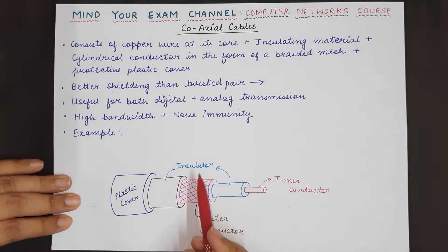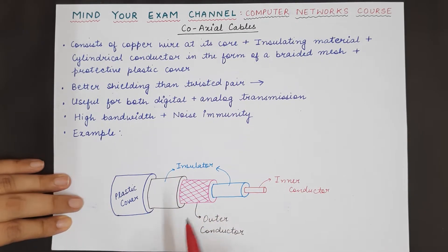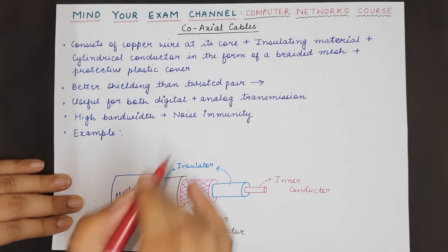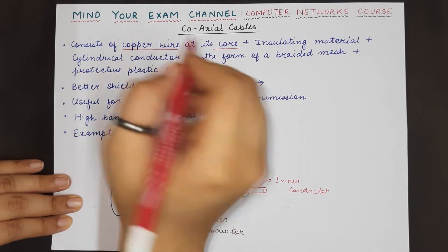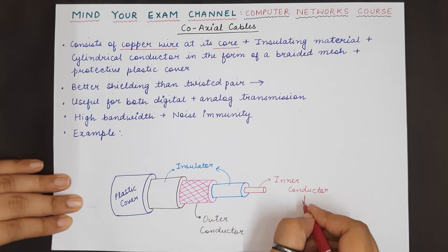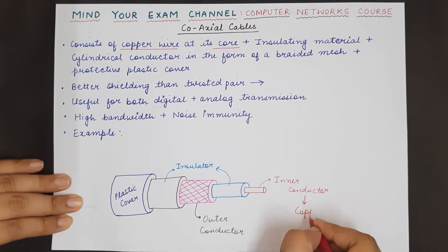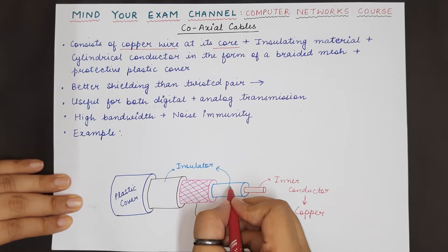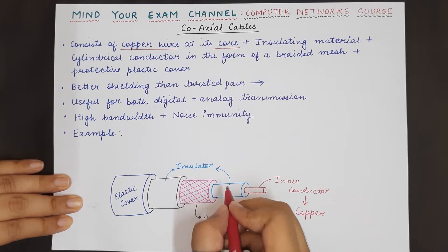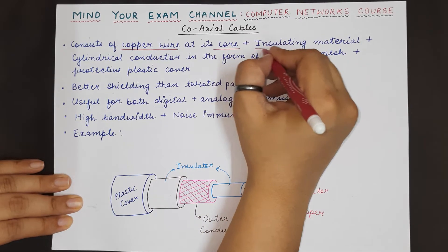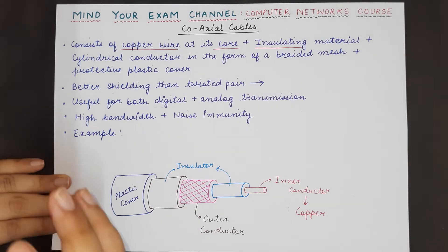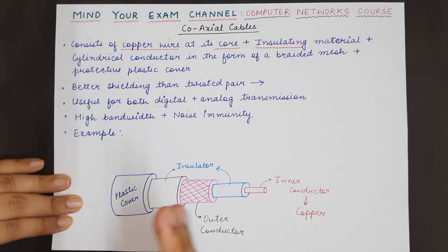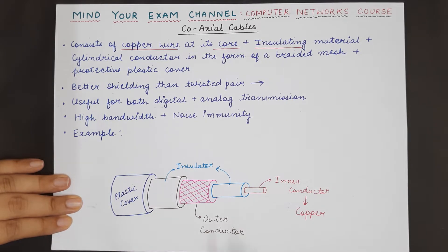Coaxial cable looks something like this. It consists of multiple layers but the core is made up of a copper wire. The inner conductor which is made up of copper is covered with an insulating material. This insulating material is required so that the copper wire can be protected and the signal is not affected by noise.